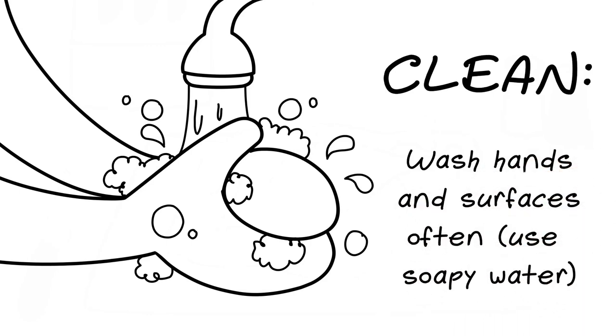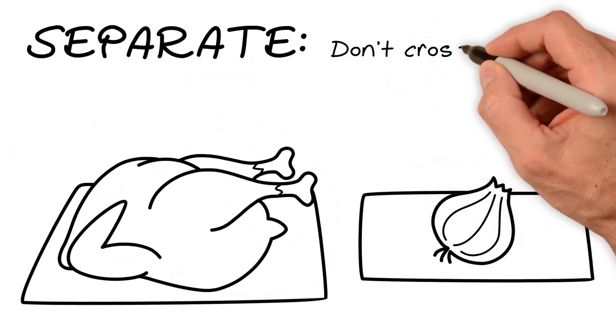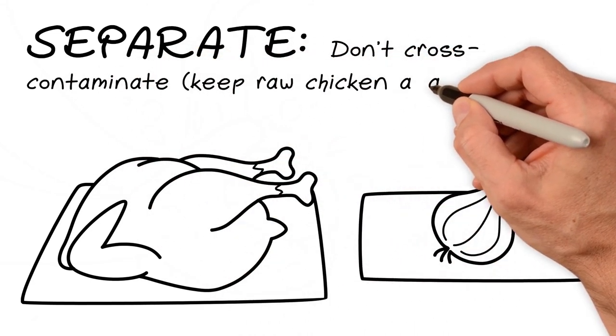Separate. Don't cross-contaminate. Keep raw chicken away from other foods and use separate cutting boards.